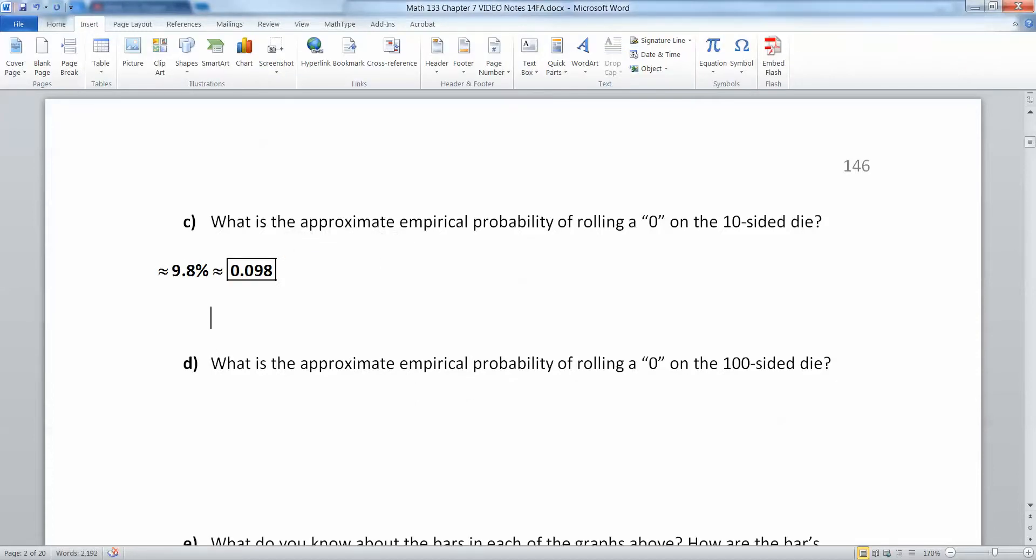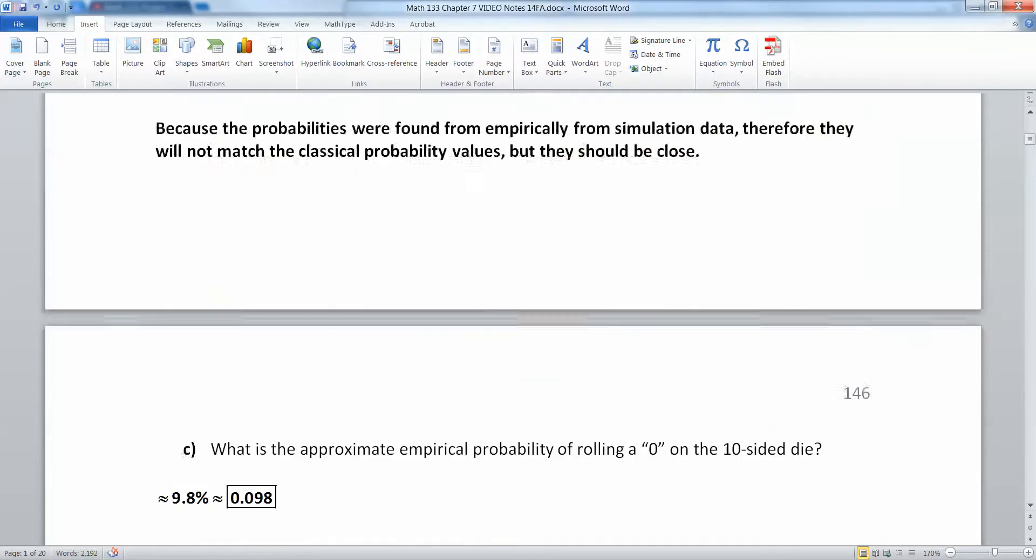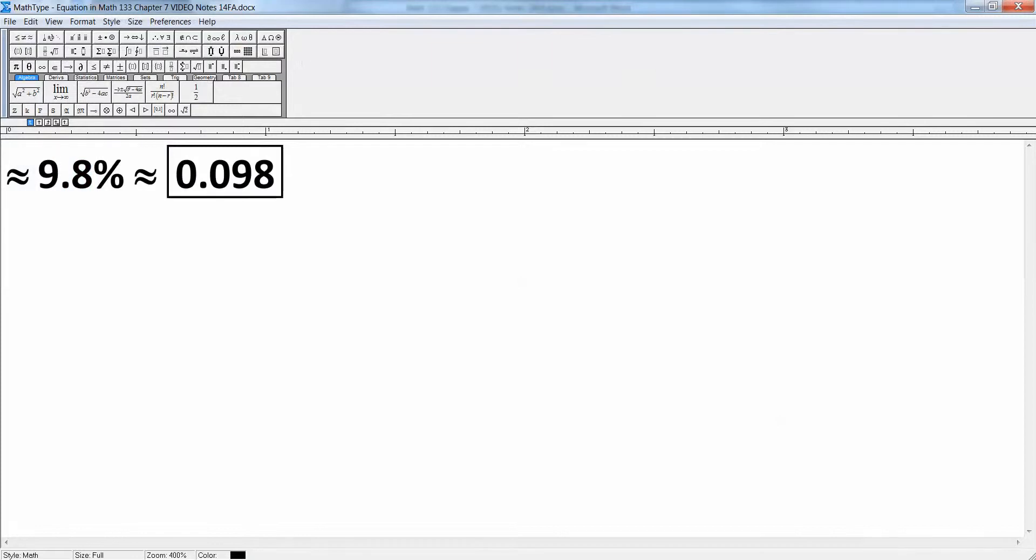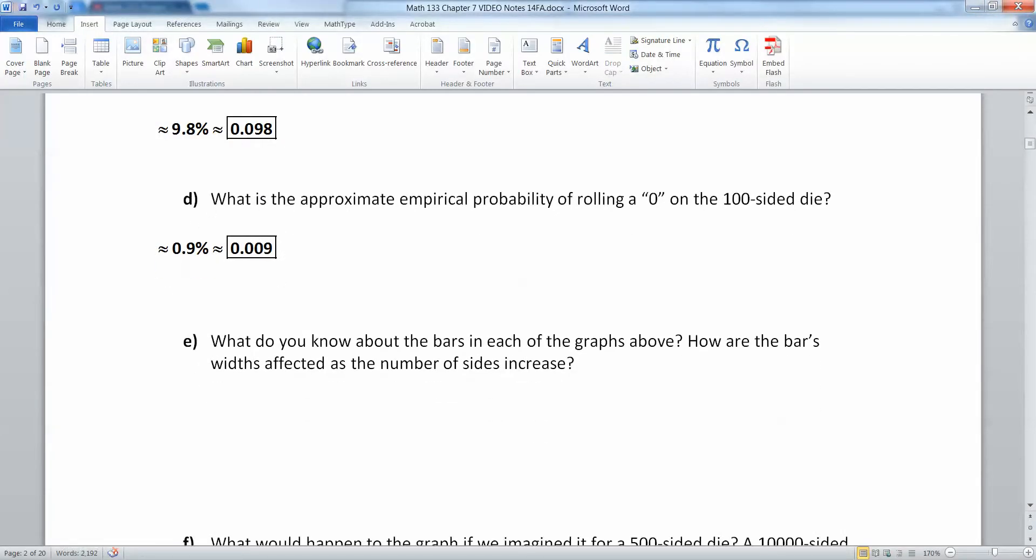Now, what is the approximate empirical probability of rolling a 0 on the 100-sided die? You can see zero is that first bar, so it looks like it's right below the 1%, maybe 0.9%, maybe. It's 0.9% because it says percent on the left-hand side, so it's about 0.9%, which is about 0.009. Of course, we're estimating here. We don't know exactly, we're just estimating.